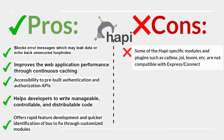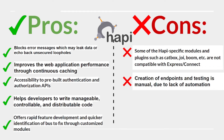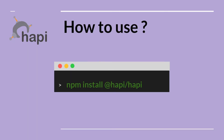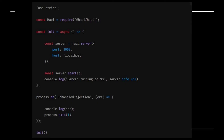Hapi cons: some Hapi-specific modules and plugins such as Catbox, Joy, Boom, etc. are not compatible with Express and Connect. Creation of endpoints and testing is manual due to lack of automation. Run the relevant command to install Hapi.